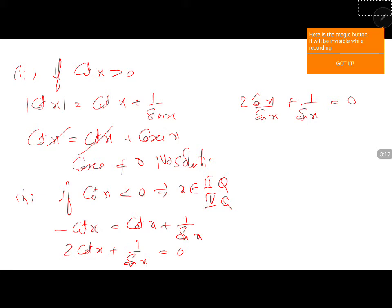That will give us sin x not equal to 0. 2 cos x plus 1 is 0. 2 cos x plus 1 is 0.